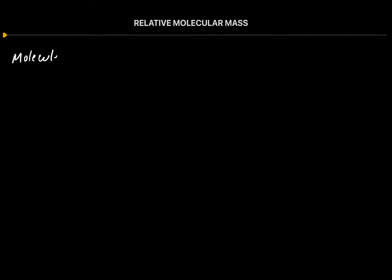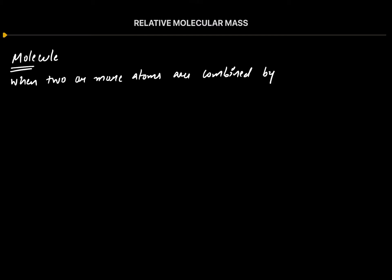First of all, let us understand what is a molecule. When two or more atoms are combined by a covalent bond, it is called a molecule. Whenever there is a covalent bond between the joining atoms, that is called a molecule. Whenever there is an ionic bond between the joining ions, that is called a formula unit, which I will explain in the next lecture.